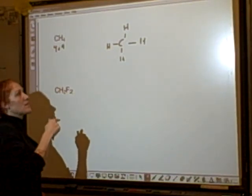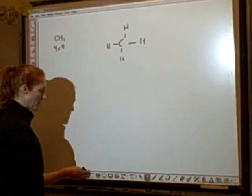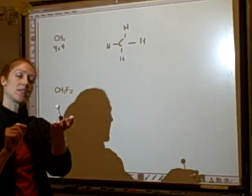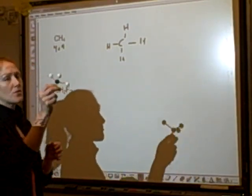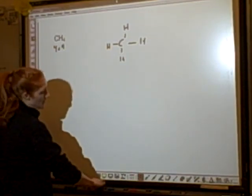So four things, no lone pairs. The electron shape and the molecular shape are both tetrahedral. I know that tetrahedral is a symmetrical shape. It's this guy. So this symmetrical shape is going to be nonpolar.